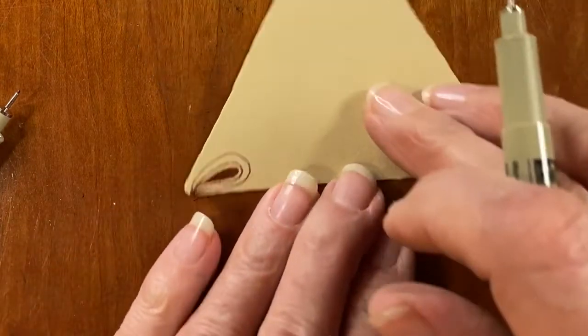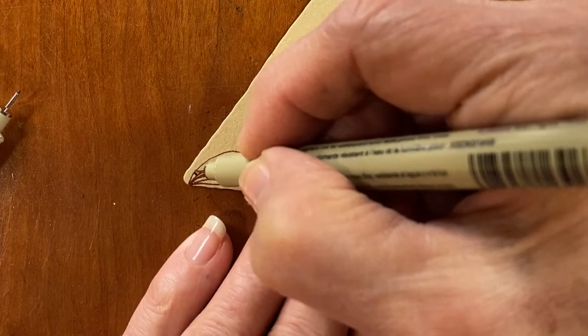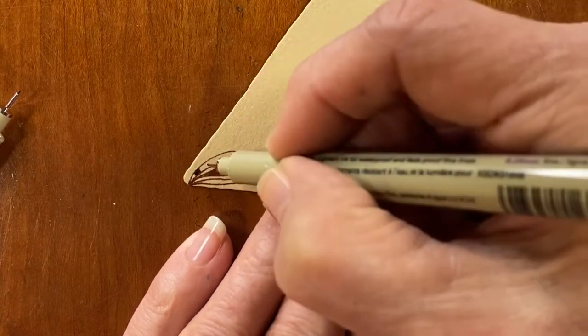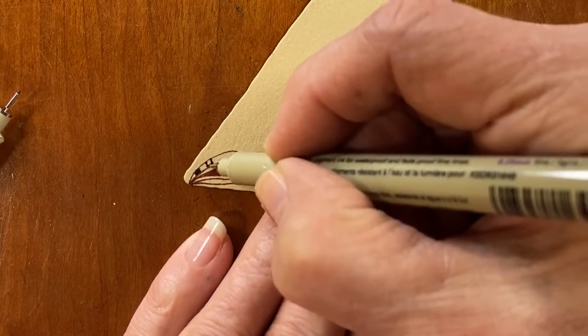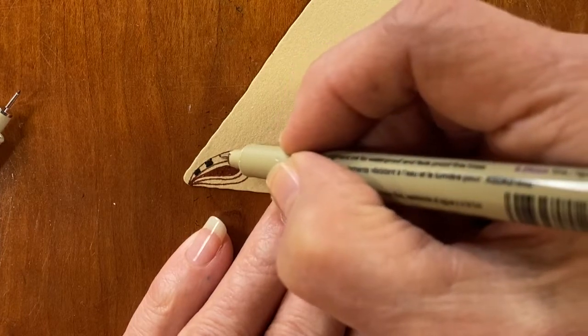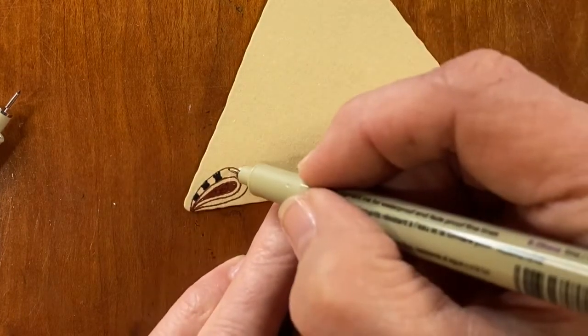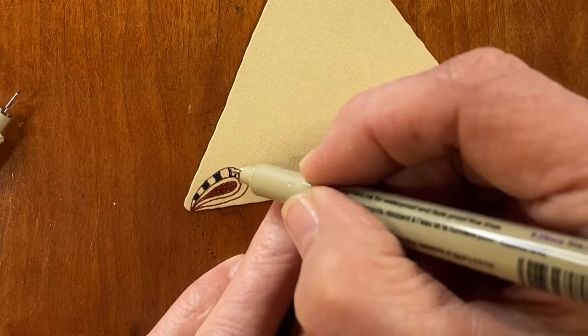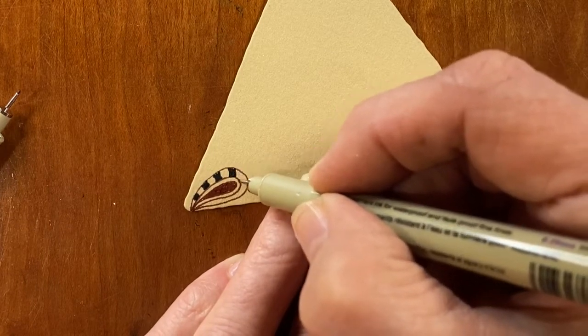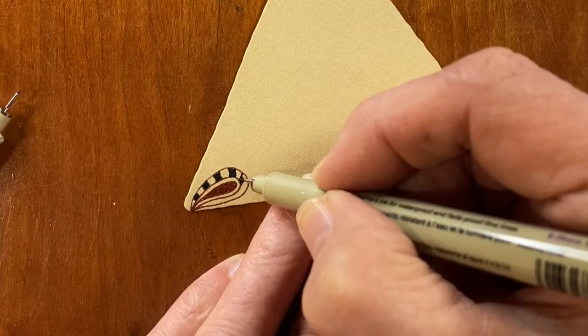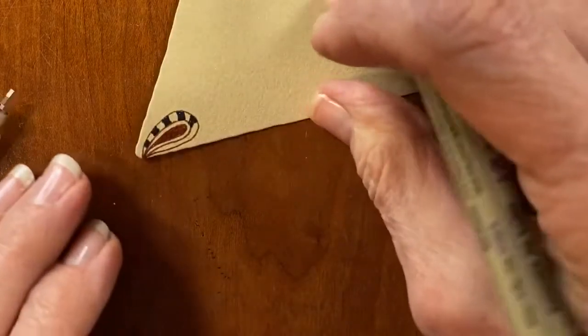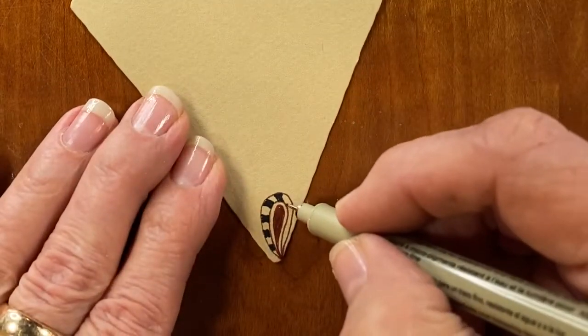And then we're going to grab the black Micron 01 and do the little crescent moon, no, no. Night's Bridge. Night's Bridge. And just take our time going around each one. This is so much fun to just take our time. And you can see mine are a little wonky, but the wonkiness really adds to it.